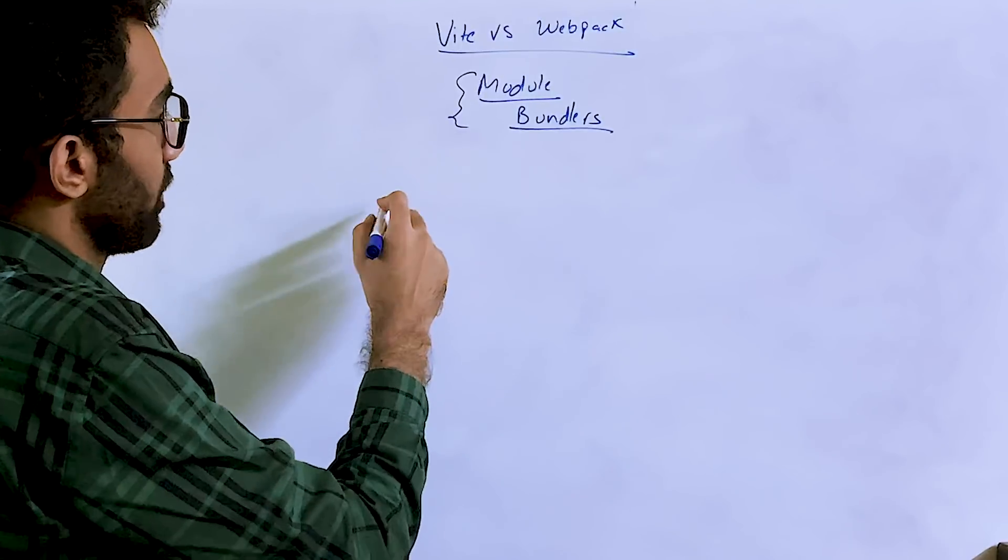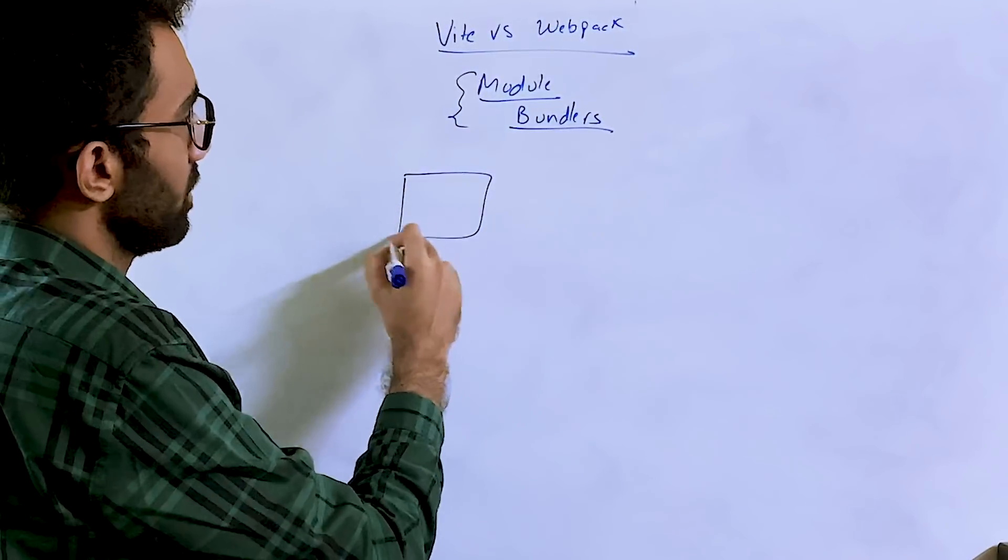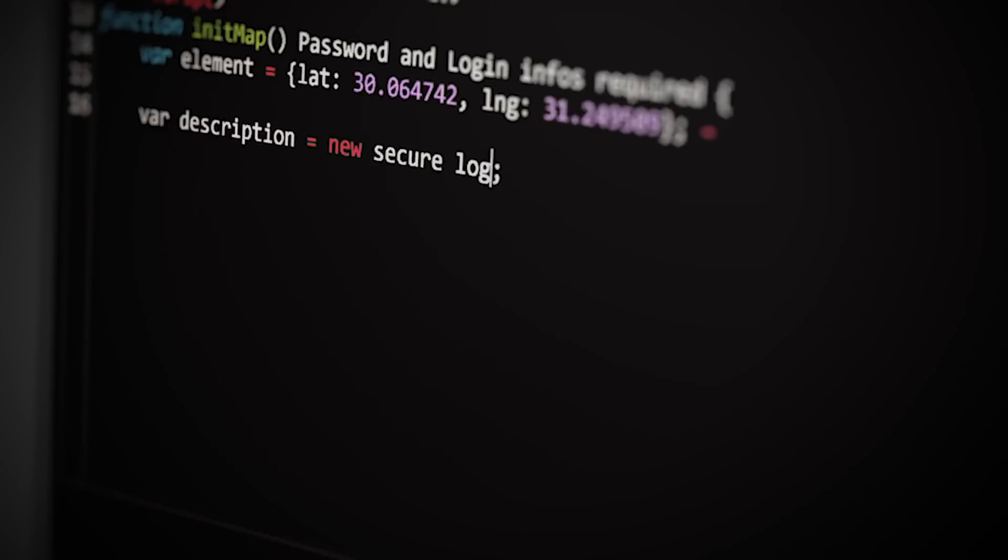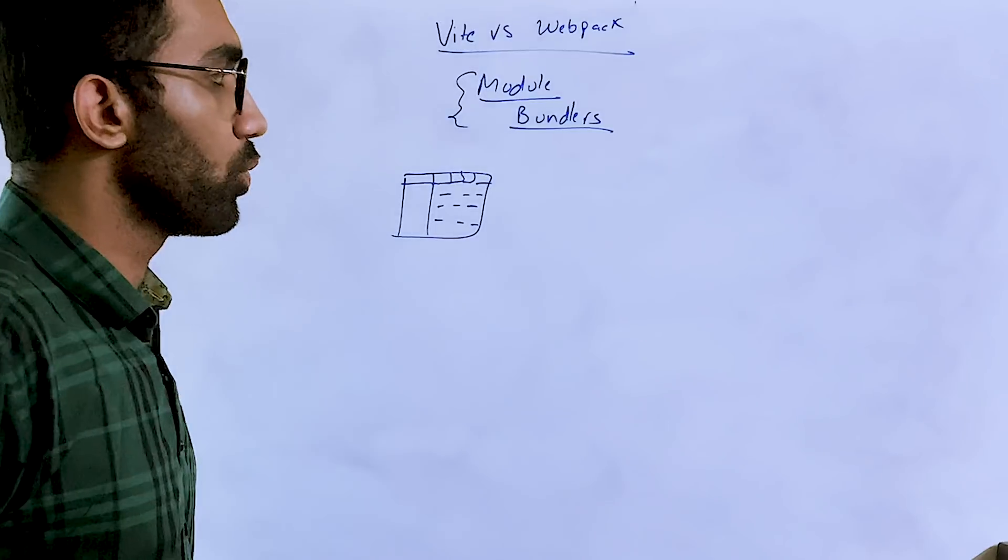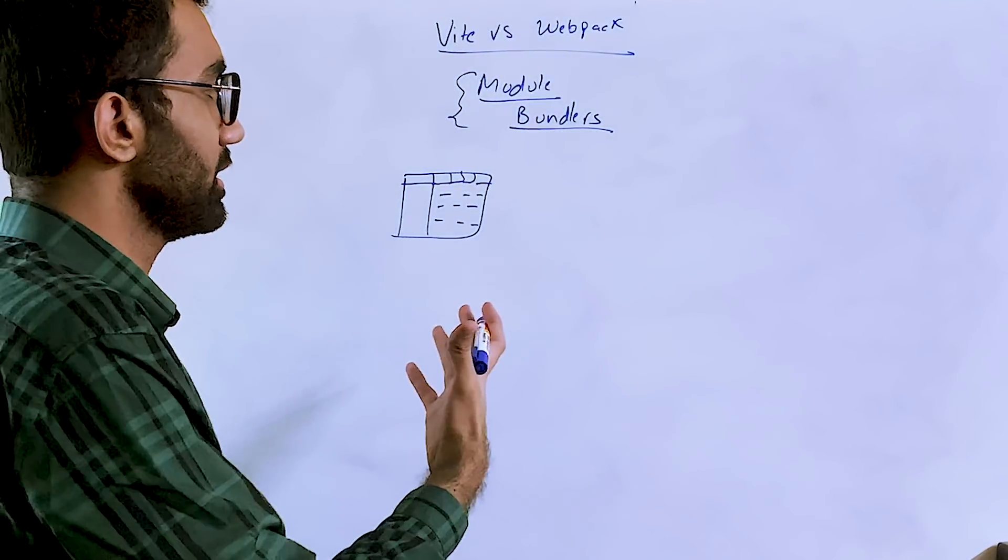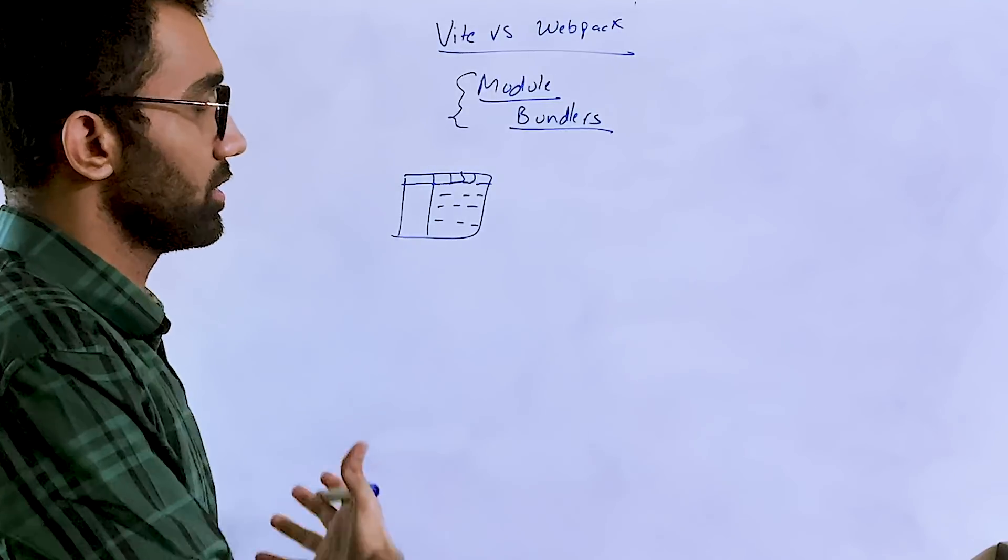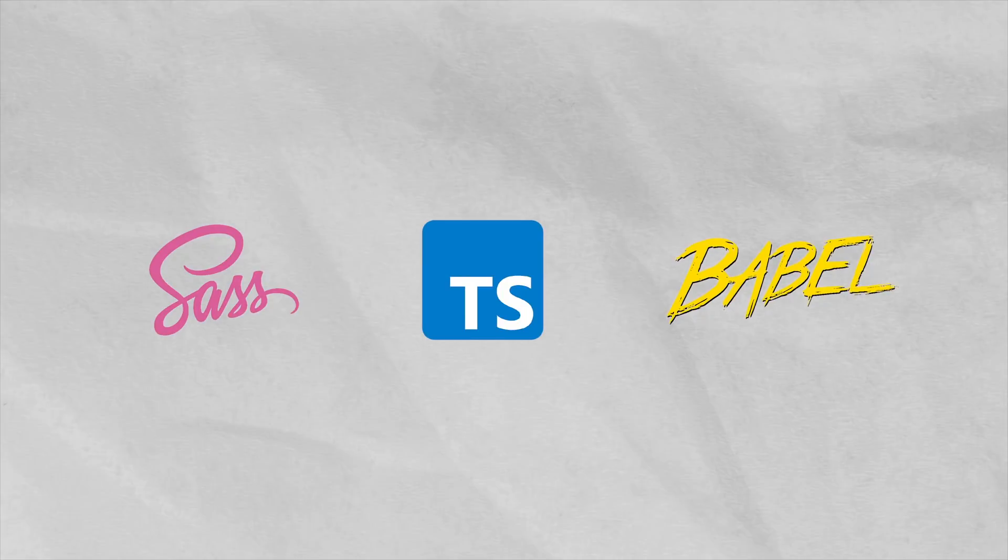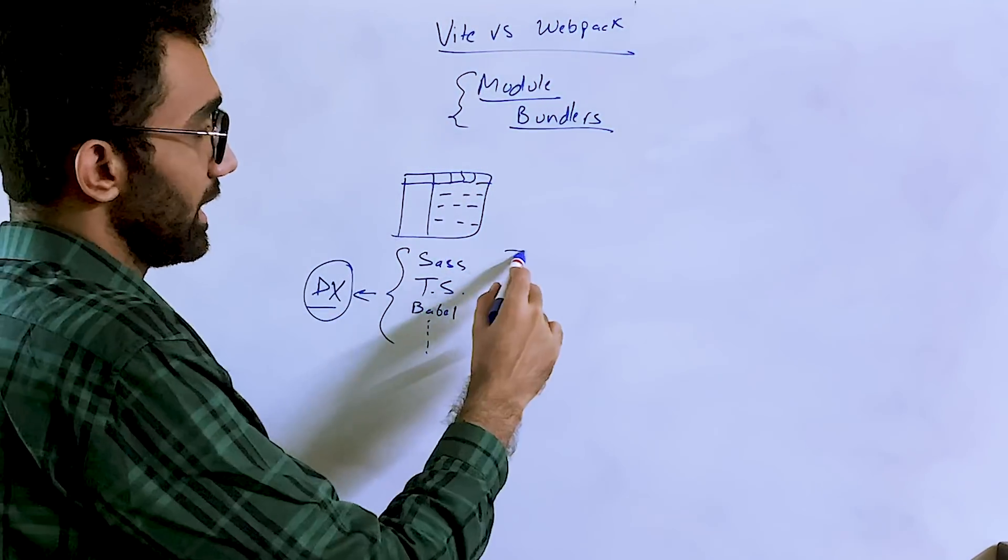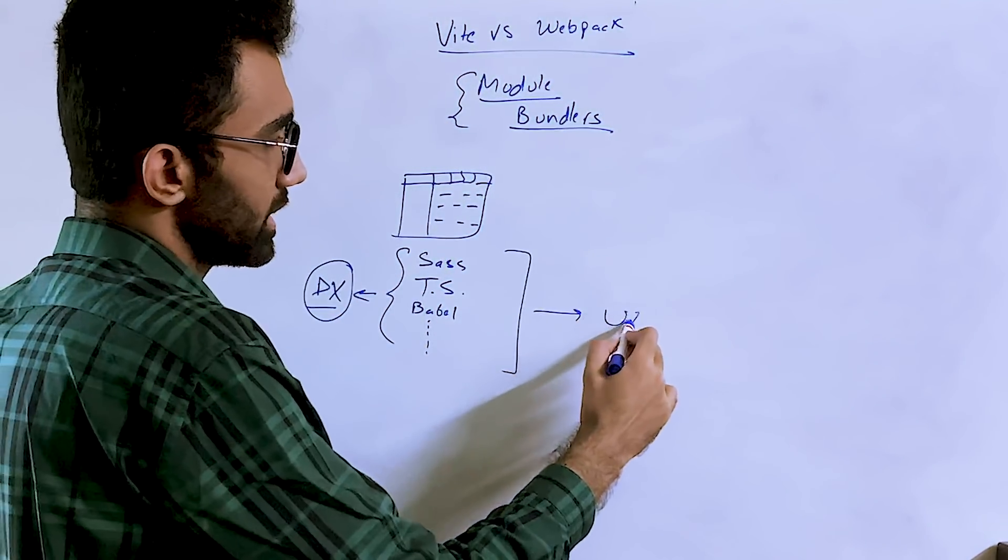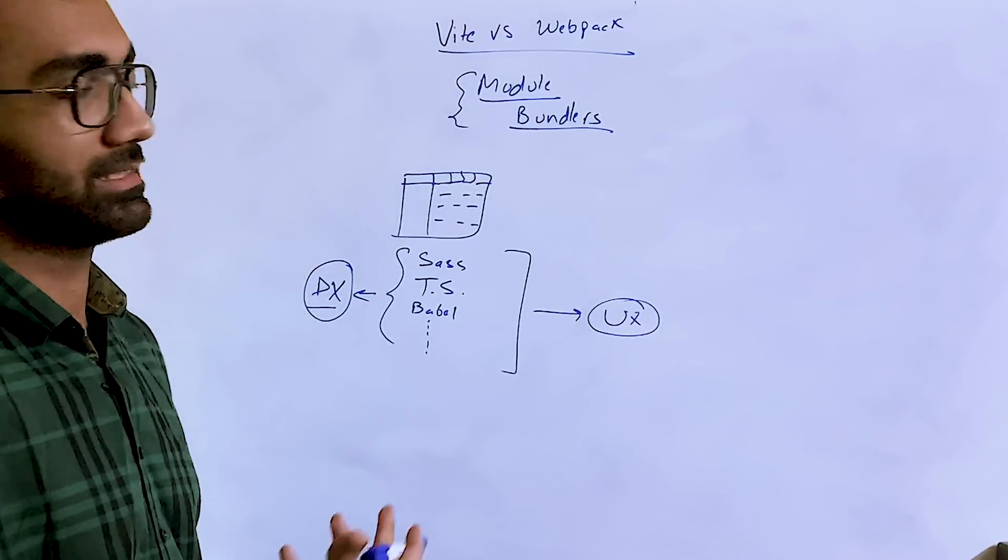When you're building your front-end applications, you write all the nice code in your IDE and you edit files and you have all the nicely written code. But what your browser needs is a certain style of JavaScript, a certain style of CSS. Maybe you're using Sass, maybe you're using TypeScript, maybe you're using Babel. You're using all these tooling to help yourself as a developer, right? So you are optimizing for developer experience. The end goal is to actually optimize for user experience, which also includes shorter bundle size, smaller files, compressed code, performance, and so on.